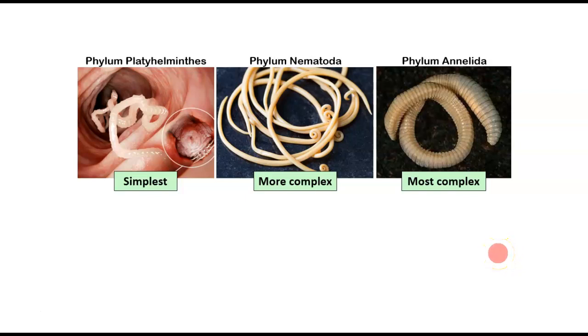Then there's phylum Nematoda, a little more complex. Phylum Platyhelminthes, we would say, are acoelomates. They don't have a coelom. Phylum Nematoda, we would say, are pseudocoelomates. So you're starting to see that coelom, but it's only partially lined with mesoderm tissue. And then finally, phylum Annelida, which is the most complex. And those guys are true coelomates, which all other animal groups, after we study about Annelida, will also be true coelomates.